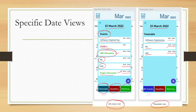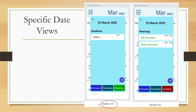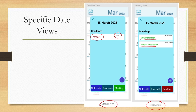This is what the specific date views look like. We can also have a deadline view showing a specific event deadline with time, or a meeting view listing all meetings for a specific date. So for any date, you can see all events or filter by timetable, deadlines, or meetings.